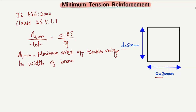D is the effective depth of the beam, and fy is the characteristic strength of the reinforcement.